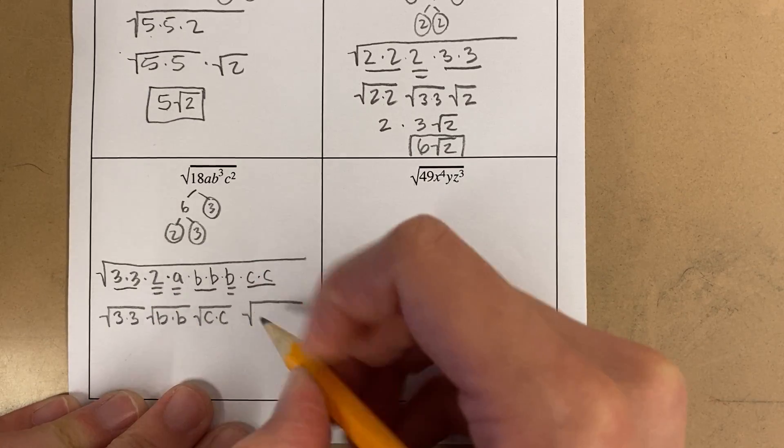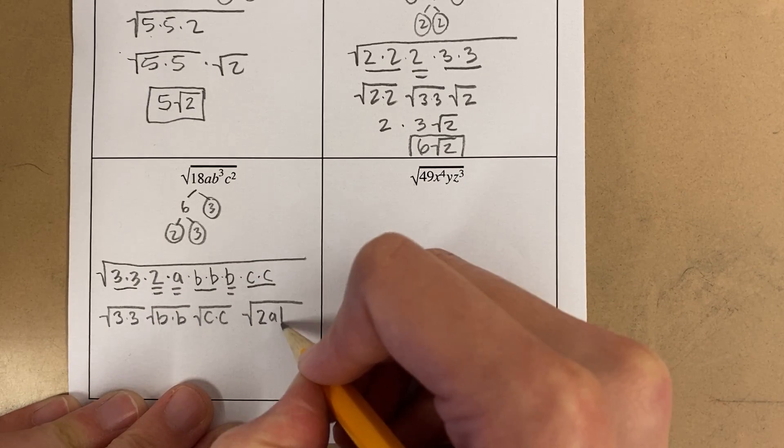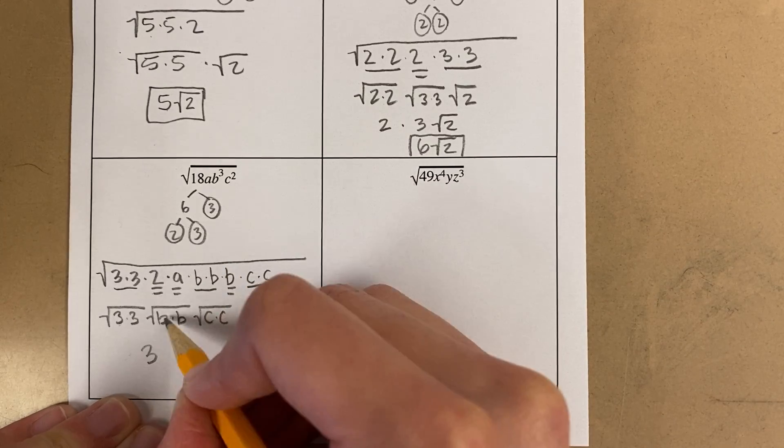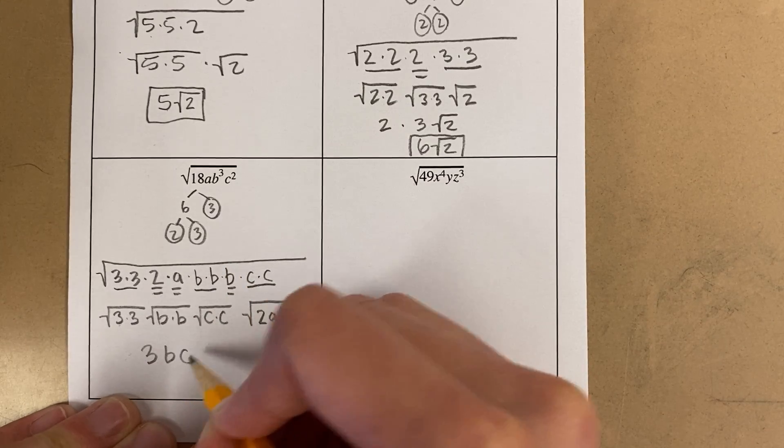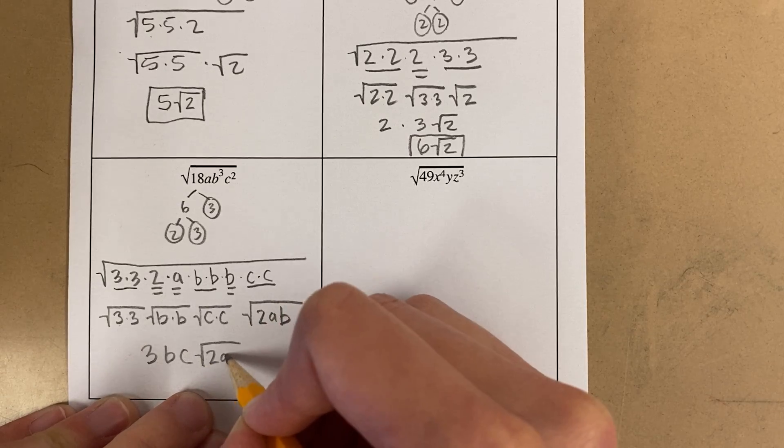And then in my single house, I have a 2, an a, and a b. This becomes 3, this becomes b, this becomes c. And on the inside, I have 2ab.